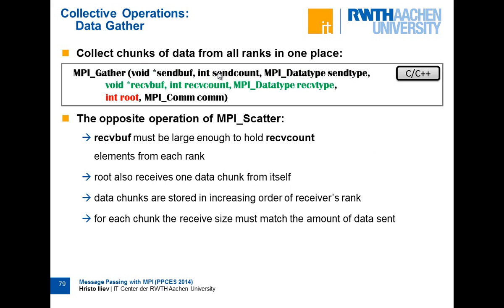Scatter can be used to distribute data. If you have a big array you want to process with MPI, you can use scatter to distribute it into chunks across the processes. Then each process does something on its chunk, and afterward you want to collect the data back.